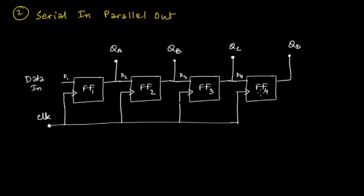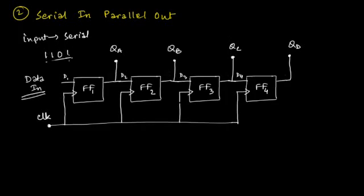Here is the circuit diagram for the serial in parallel out shift register, once again constructed using D flip-flops. Let's take the same 4-bit data: 1-1-0-1. Starting with the LSB, whenever a 1 appears as input on line D1, with the clock pulse this 1 is stored and sent to the output line QA — the output from the first flip-flop. Then 0 comes as the next input.